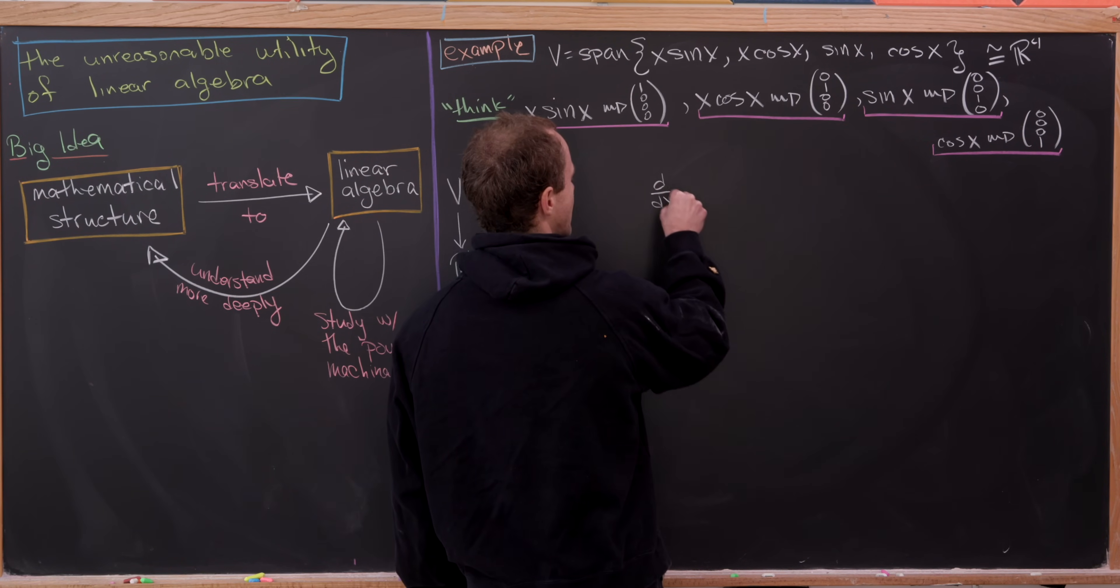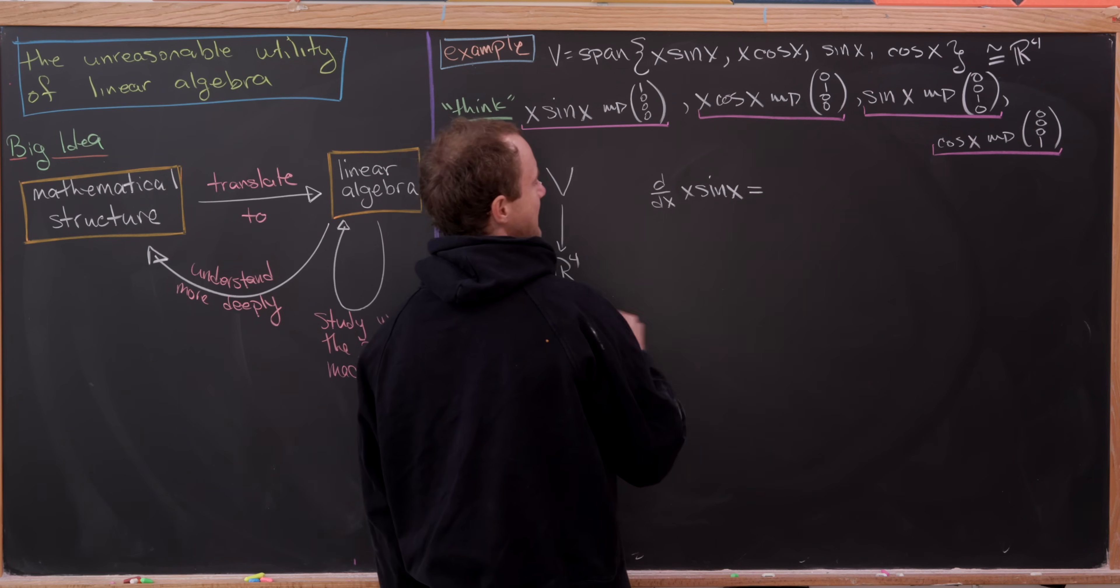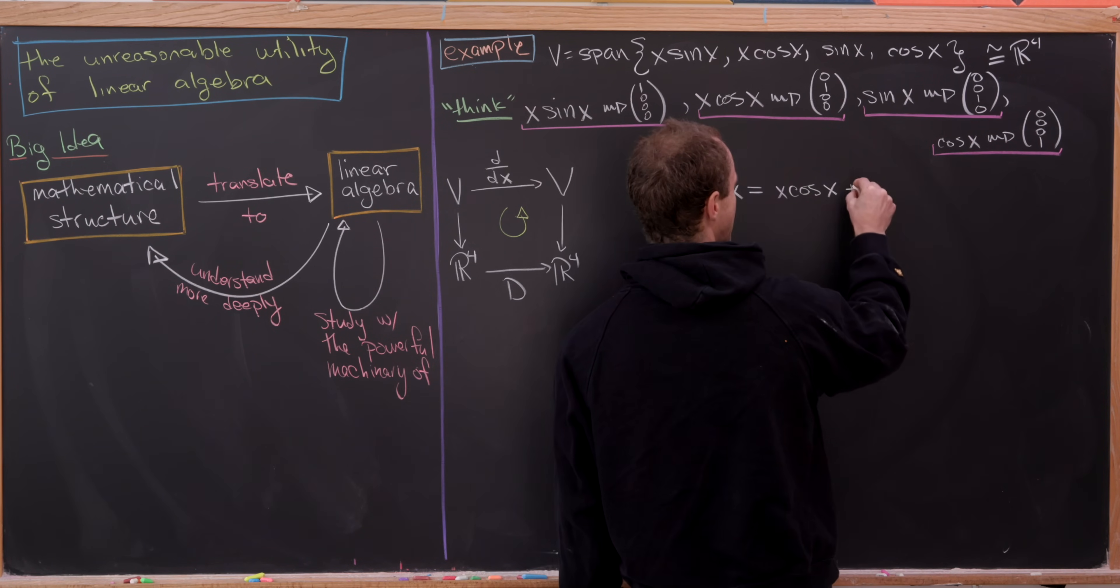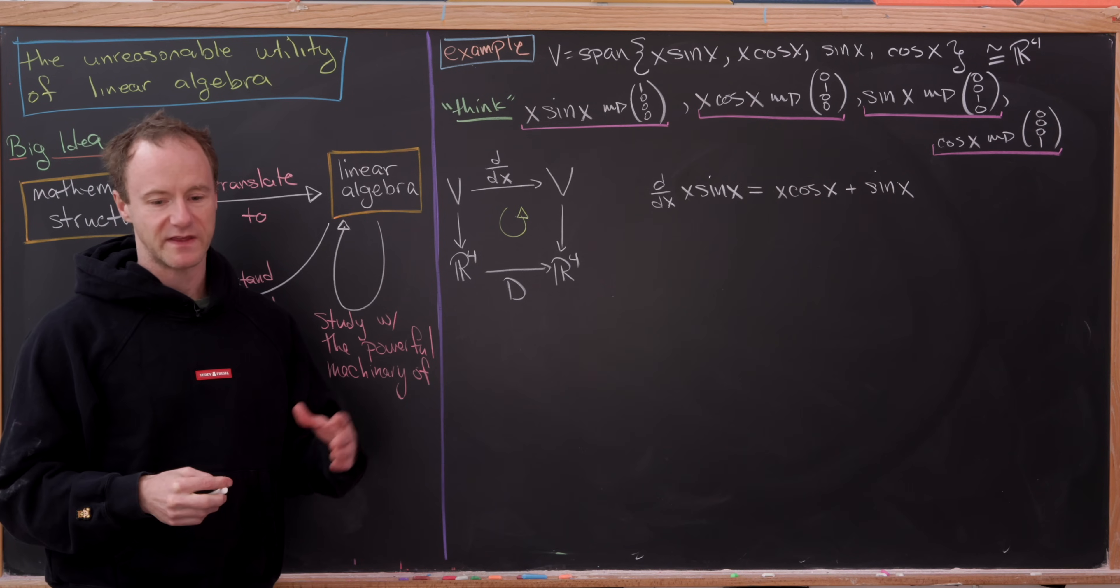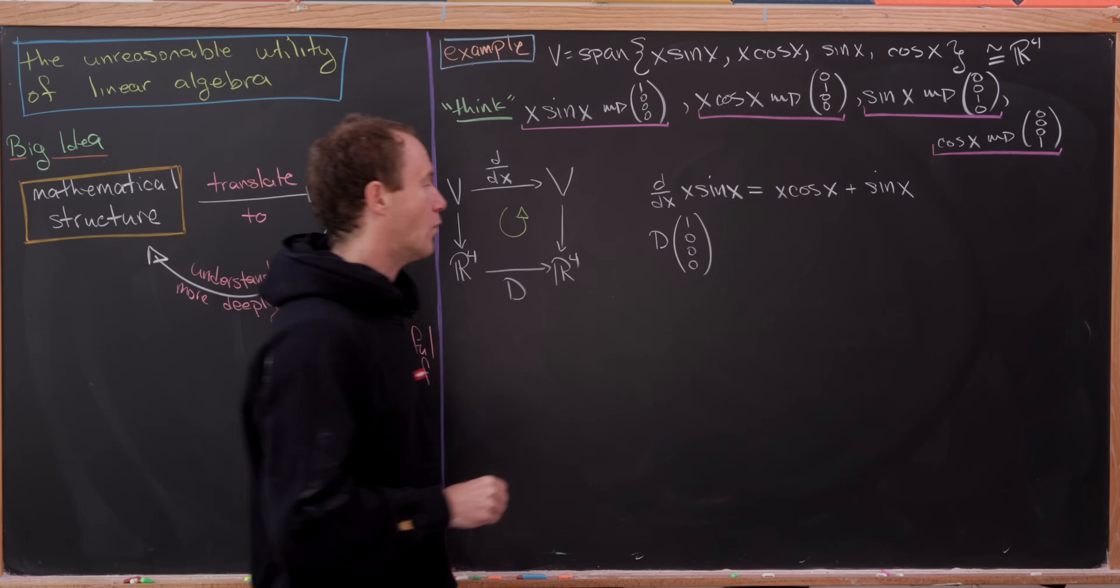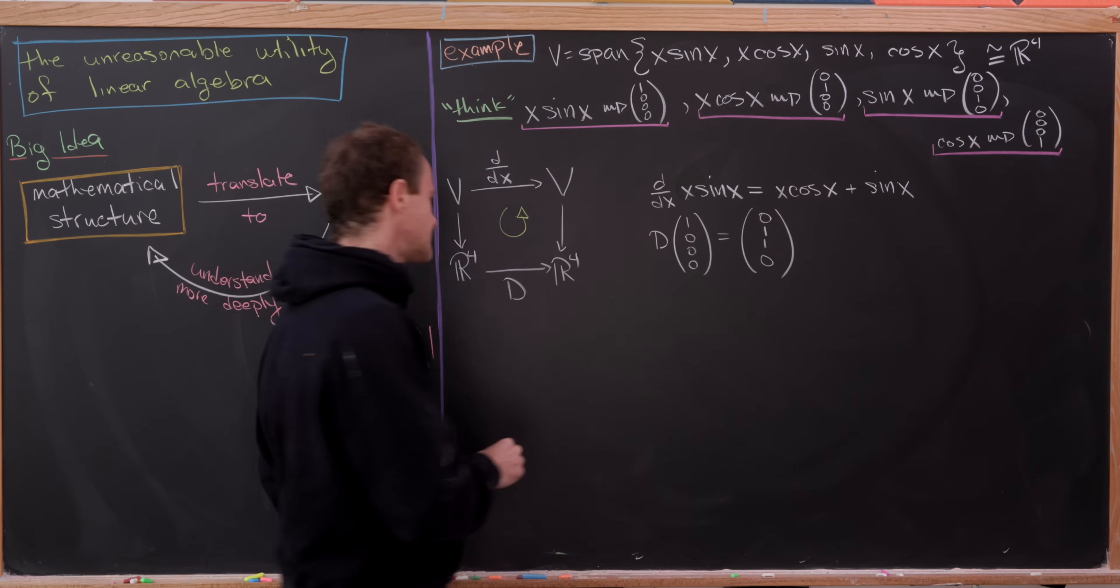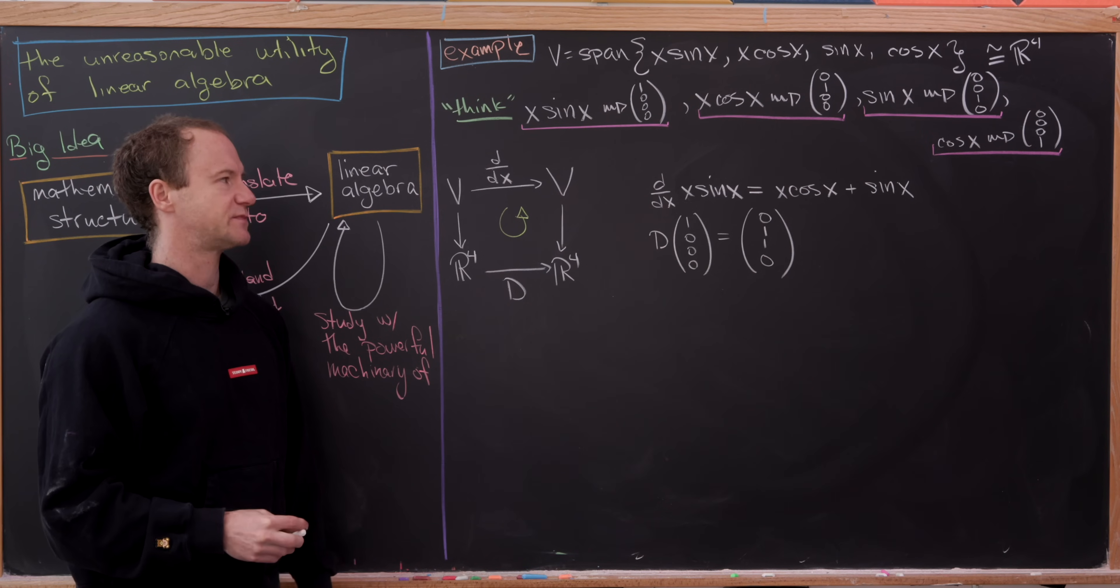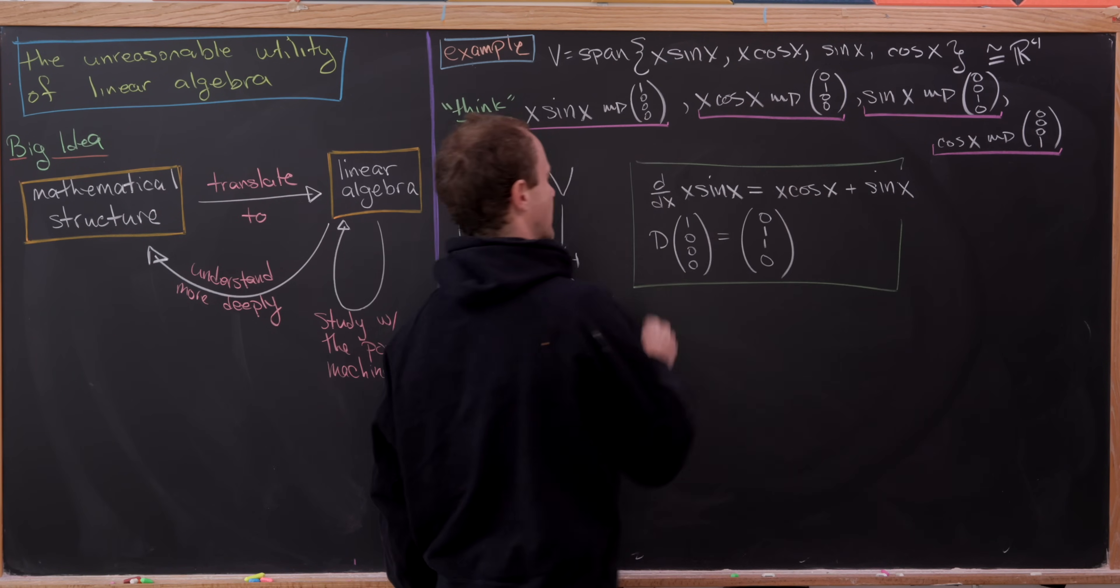So we've got the derivative with respect to x of x sine x equals what? Well, that's pretty easy with the product rule. We'll have x times cosine of x and then plus sine of x. But then translating that into what we want this matrix to do, that means this matrix D should multiply into our vector 1, 0, 0, 0, and give us the vector 0, 1, 1, 0. That's because that's the vector of x sine x and then the vector of x cos x plus sine of x.